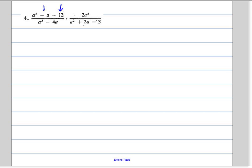Those two numbers are negative 4 and positive 3. In the bottom we have a GCF of a, they both have an A in common, we factor that out, we're left with a minus 4 on the inside.